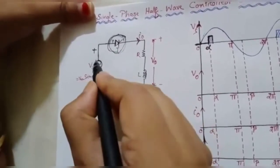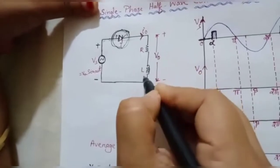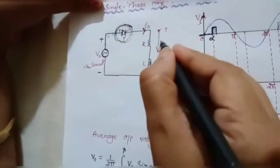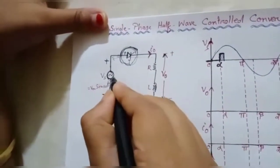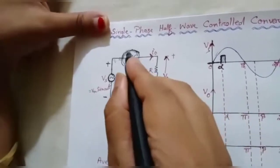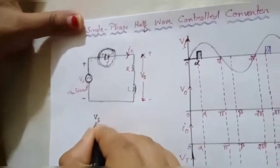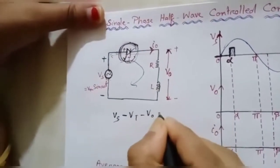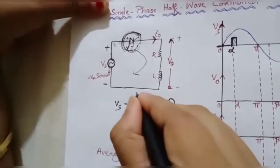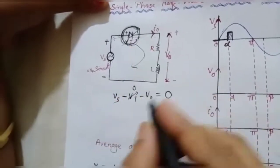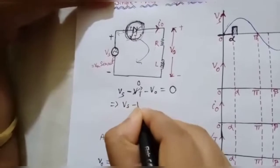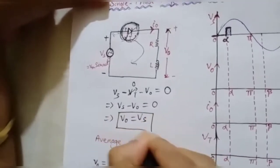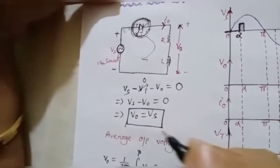When the thyristor is a closed switch, the current flows through the path: VS → thyristor → R → L → back to VS. When this switch is closed, the output voltage equals the supply voltage, because there is a short path through the device. Applying KVL: VS minus VT equals V0, and since the thyristor is ON, VT = 0, which gives us V0 = VS.